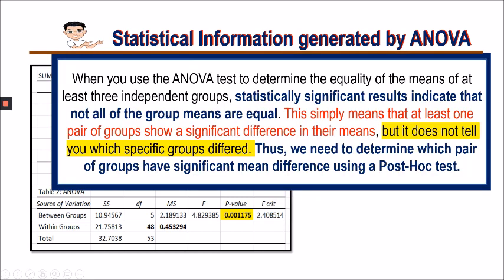When you use the ANOVA test to determine the equality of the means of at least three independent groups, a statistically significant result indicates that not all group means are equal. This means at least one pair of groups shows a significant difference in their means, but it does not tell you which specific groups differ. Thus, we need to determine which pair of groups have a significant mean difference using a post hoc test.